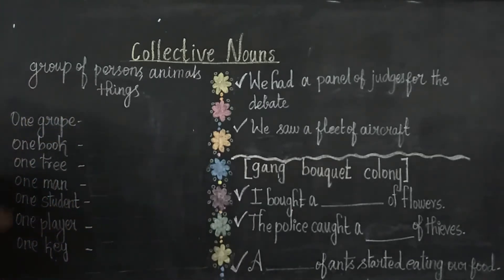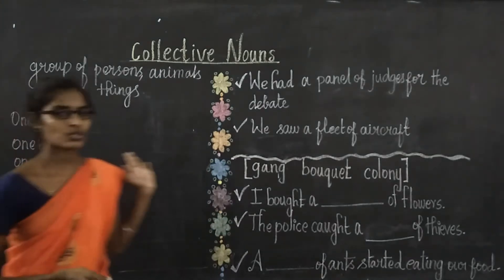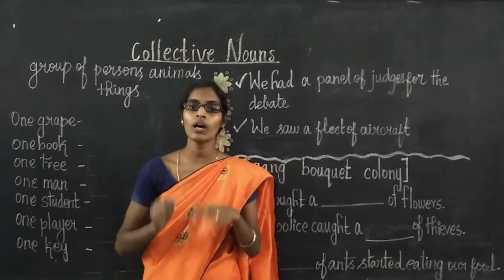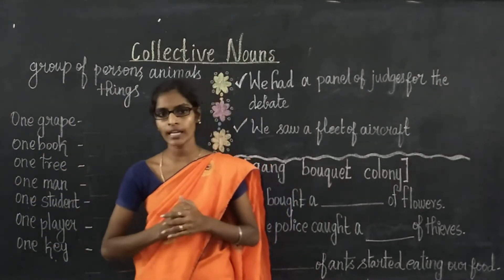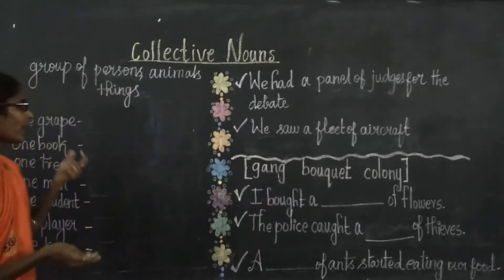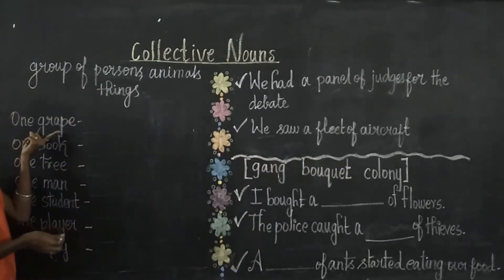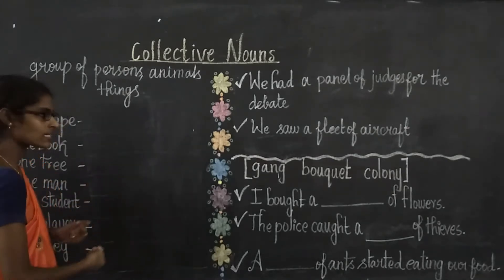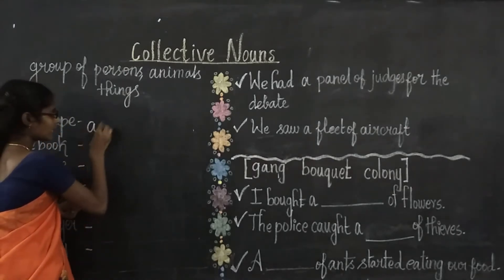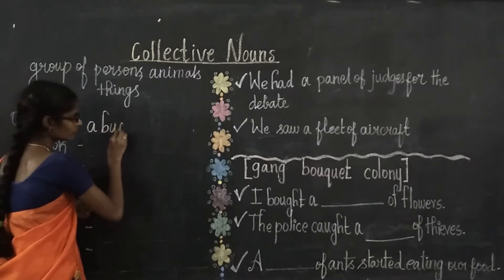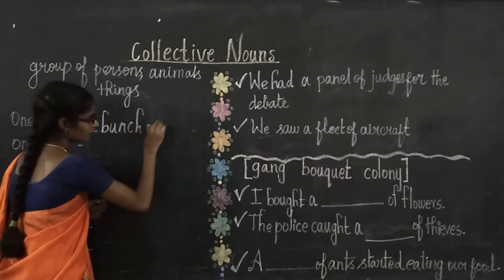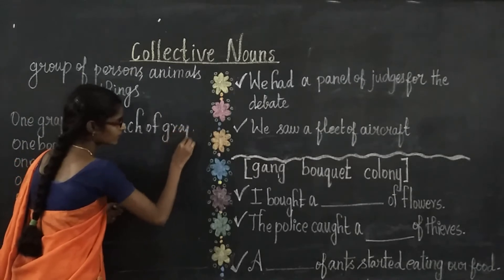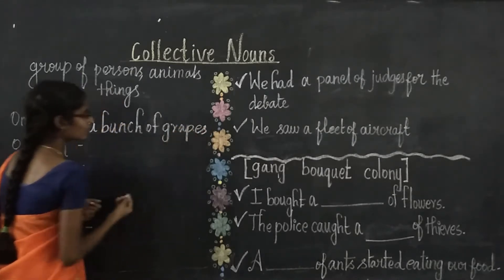Here I have written some nouns, and for these nouns we are going to learn the collective nouns. Let's start. One grape refers to a single grape. If it is a group of grapes, the collective noun is a bunch of grapes.